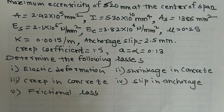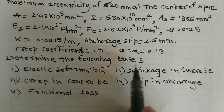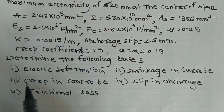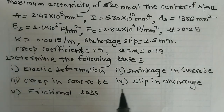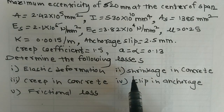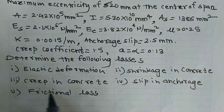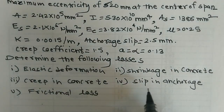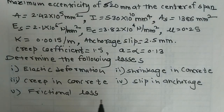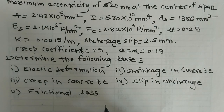Determine the following losses: first, elastic deformation; second, shrinkage in concrete; third, creep in concrete; fourth, slip in anchorage; fifth, frictional loss.